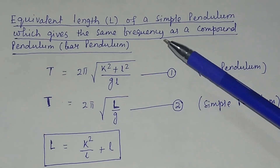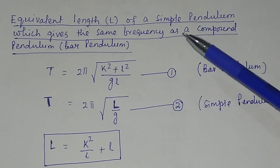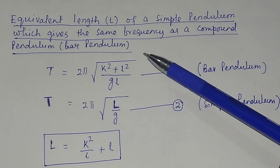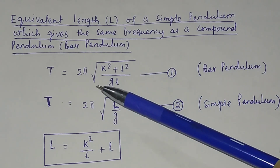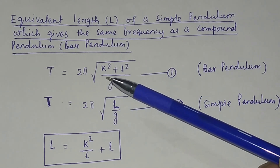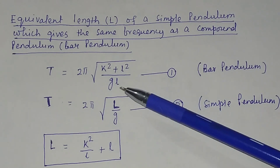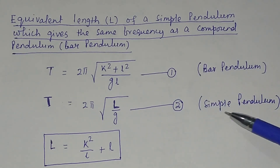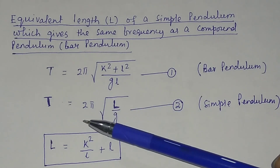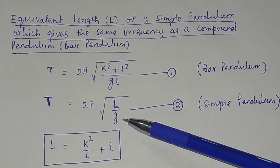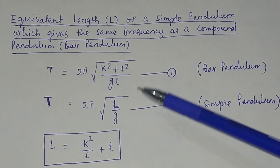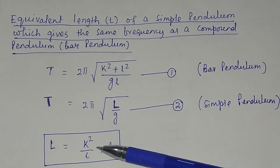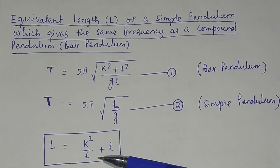What is the equivalent length of a simple pendulum which gives the same frequency as the compound pendulum or bar pendulum? From bar pendulum we deduced T equals 2 pi times the square root of k squared plus l squared divided by gl. From simple pendulum, T equals 2 pi times the square root of L by g. Comparing these two equations, the equivalent length L equals k squared divided by l, plus l.